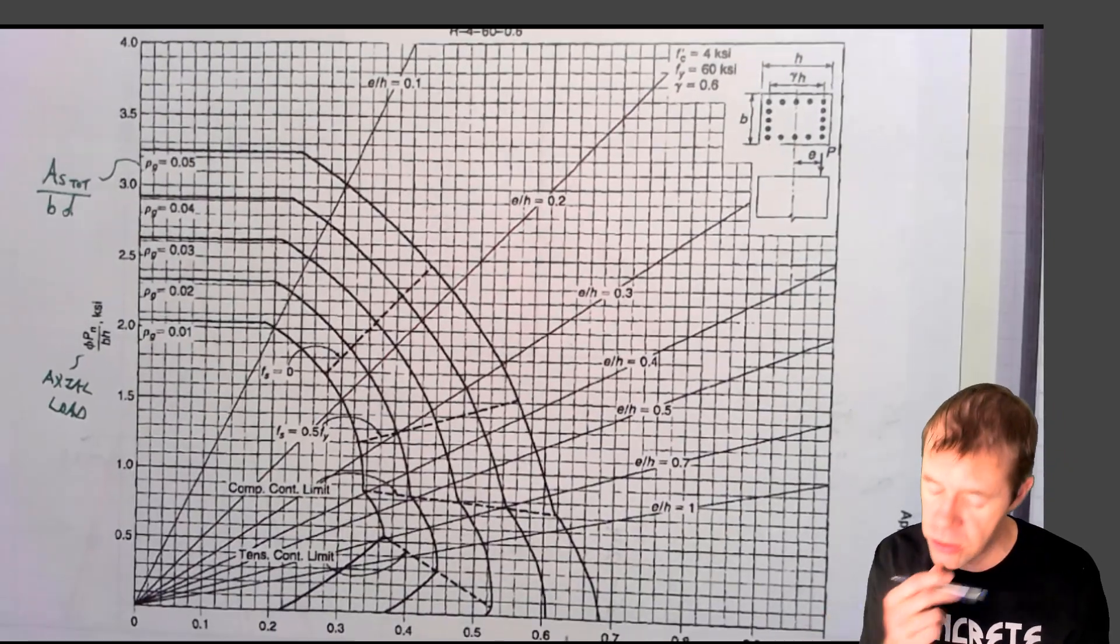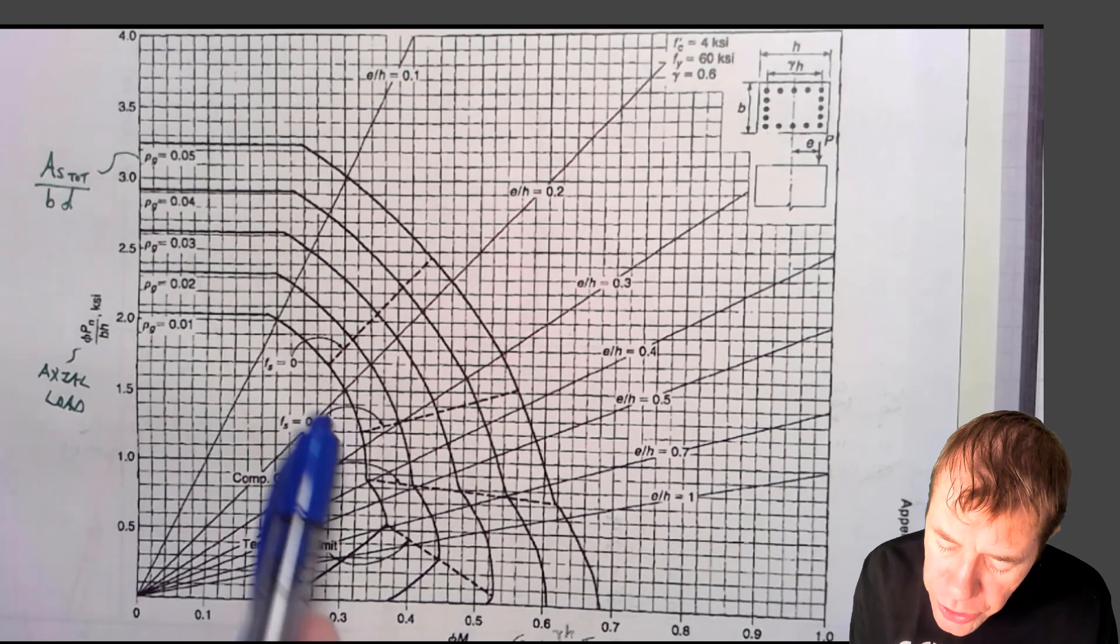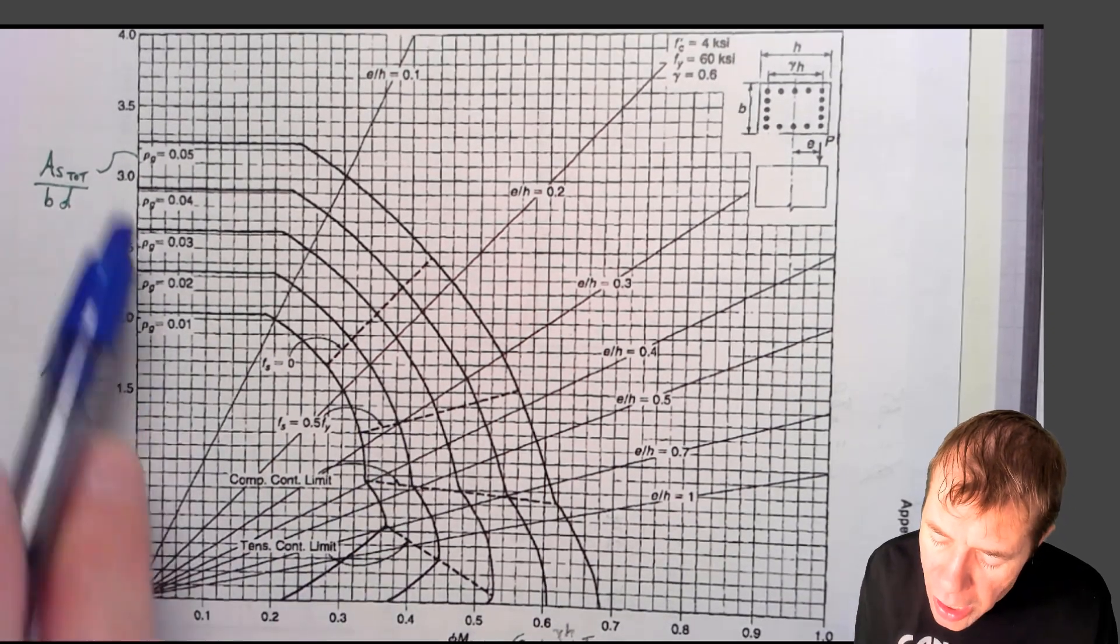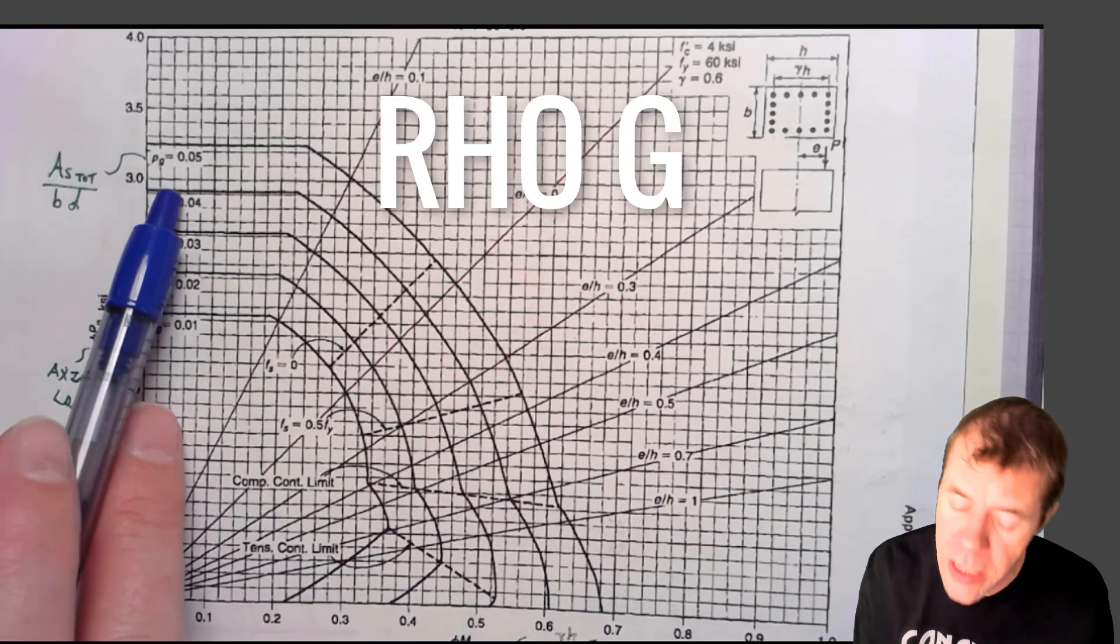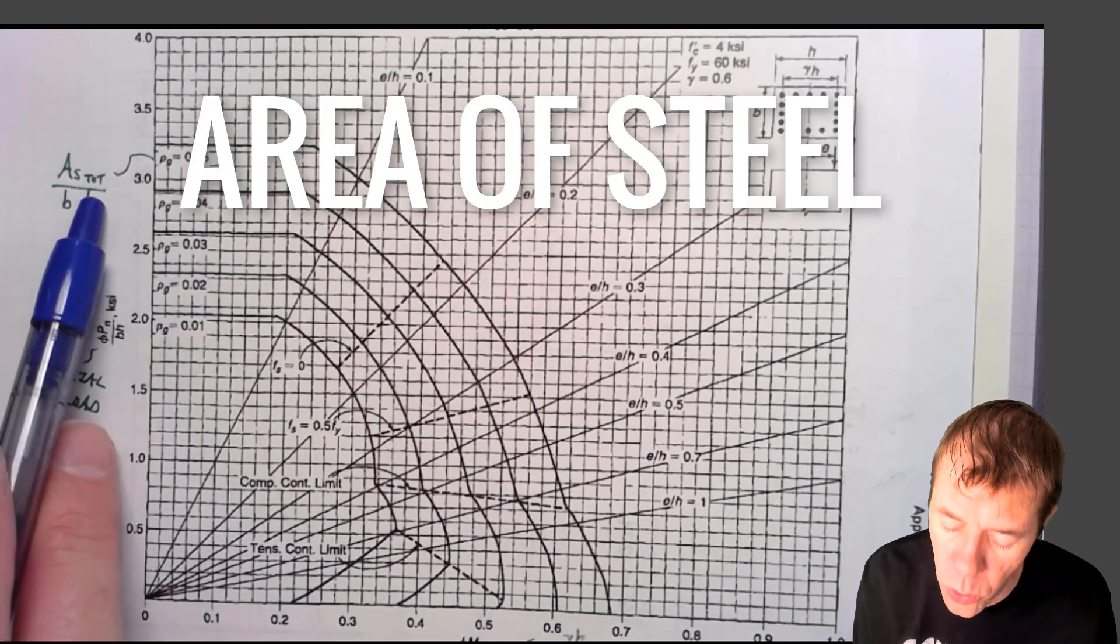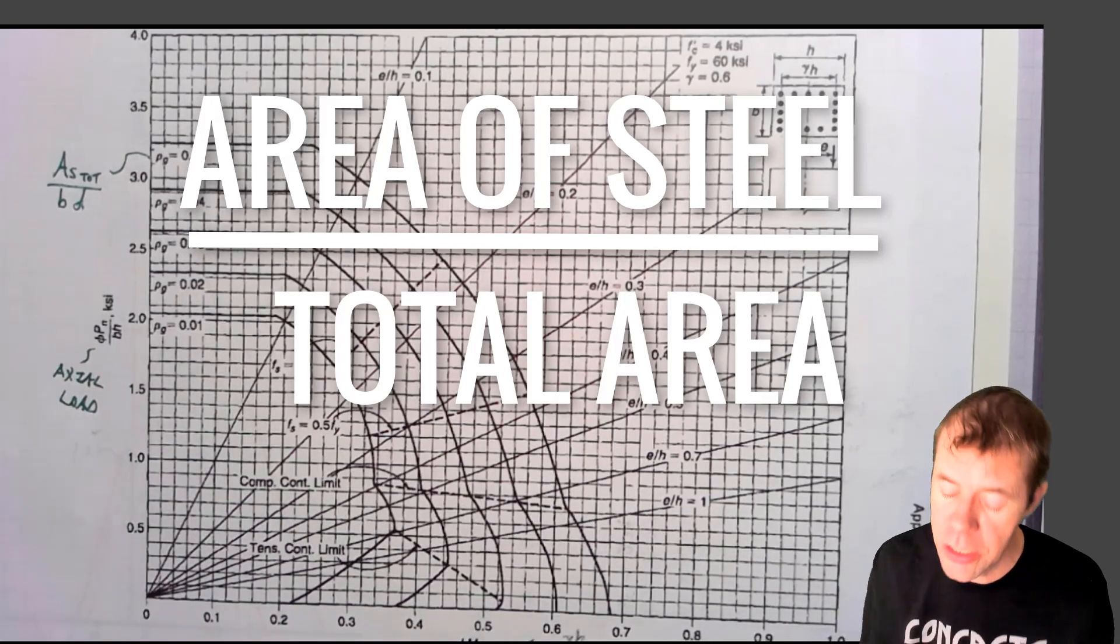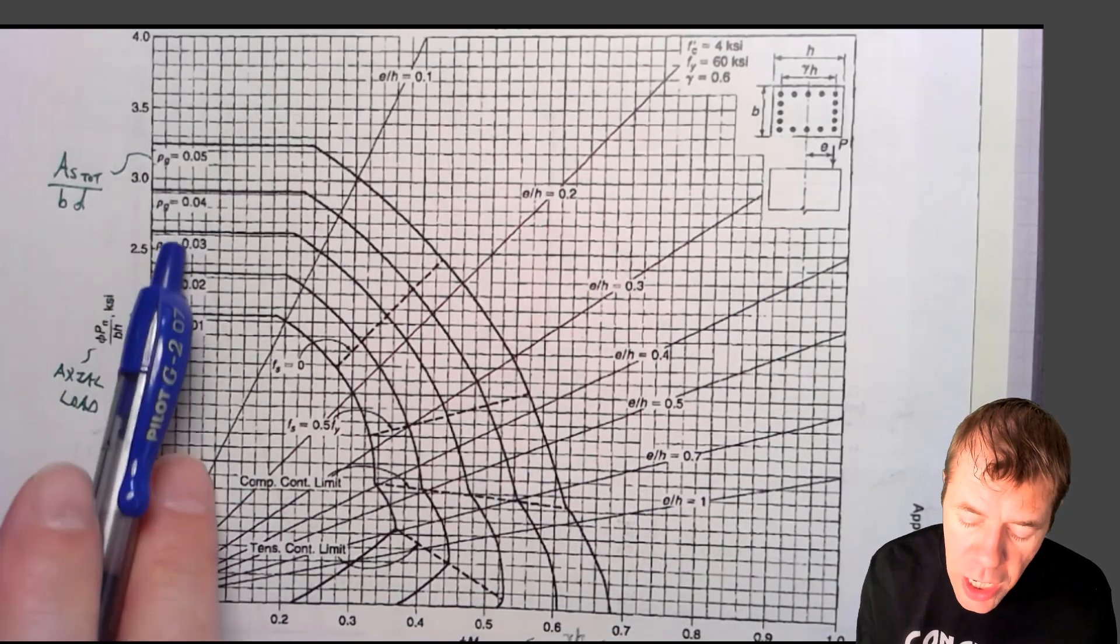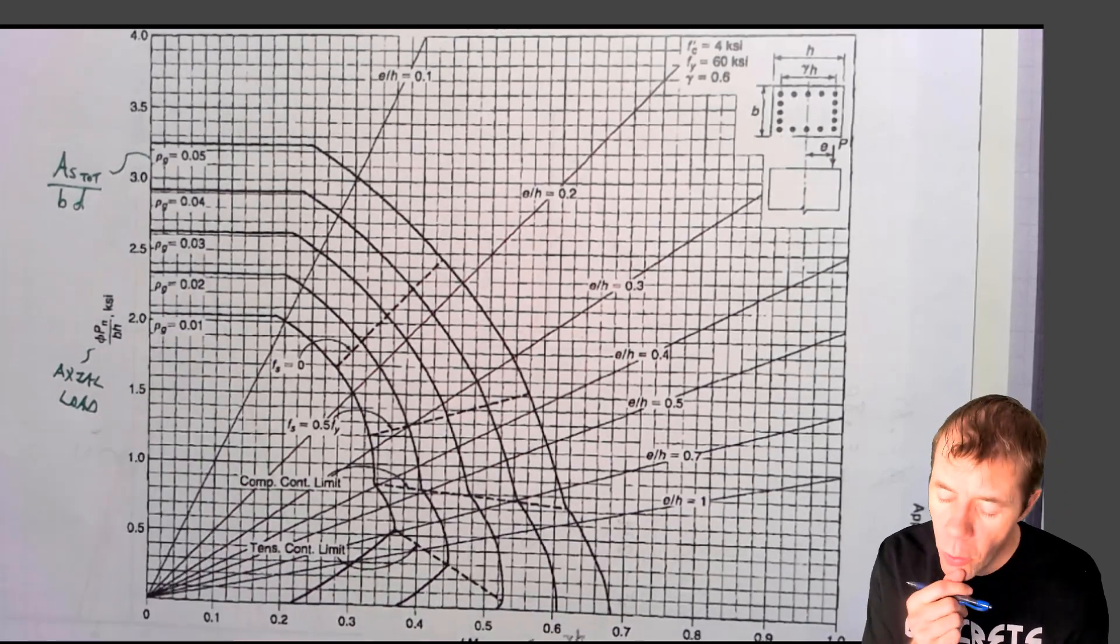And there'll be different versions of these. Now you see multiple lines here, different lines. Every line is what's called row G. This is the area of steel total divided by BD. This is like the reinforcement ratio, 5%, 4%, 3%, 2%, 1% when it comes to a column.